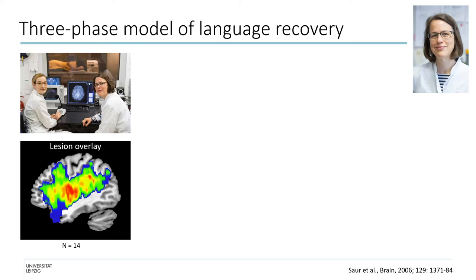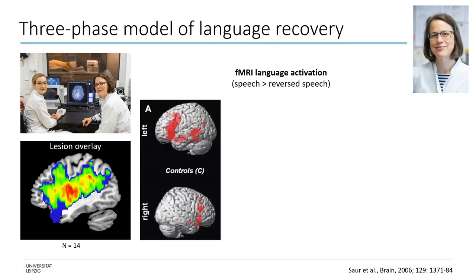I'll show you fMRI activation patterns in that study in response to intelligible speech compared to unintelligible reversed speech. In controls, this contrast activated a set of left lateralized temporal frontal regions including the inferior frontal gyrus, the dorsolateral prefrontal cortex, and the anterior, posterior, and inferior temporal lobe.